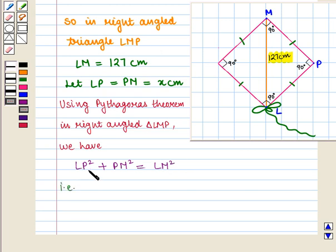That is, LP is equal to X. So, LP² will be X² plus PM² that is also X² is equal to LM² that is 127².